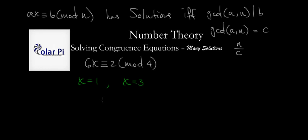18 is 2 more than a multiple of 4, right? Cool. But we stopped looking. We know these are the only two unique solutions. And that's because, according to what we wrote up here, since the GCD of, in this case, 6 and 4 is 2,